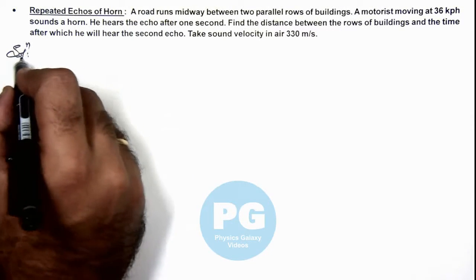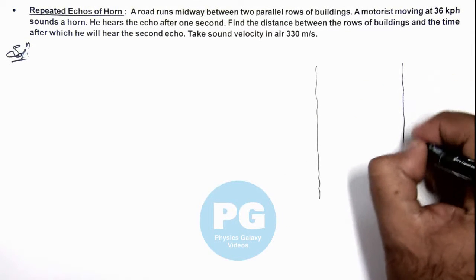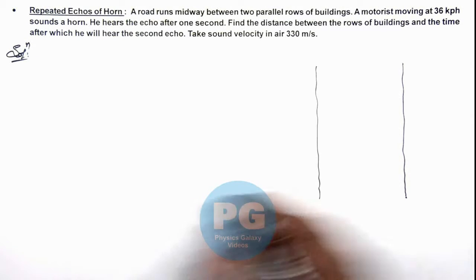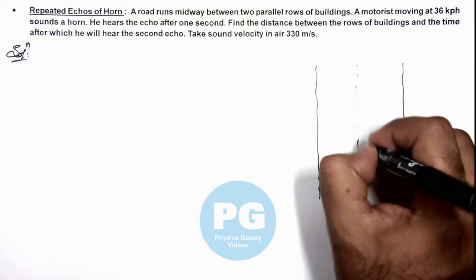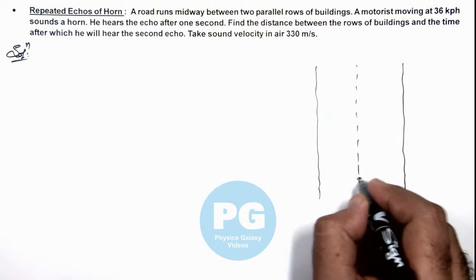And again in this illustration to analyze, we can draw the situation. Say if these are two parallel rows of buildings, and midway between, the road between these two buildings, a motorist is traveling.